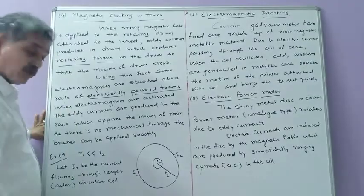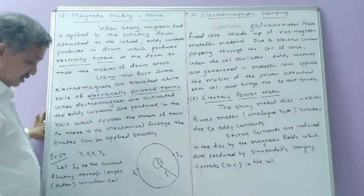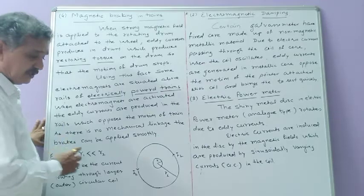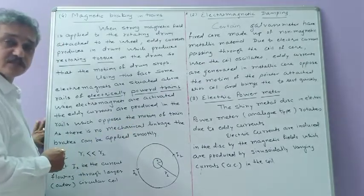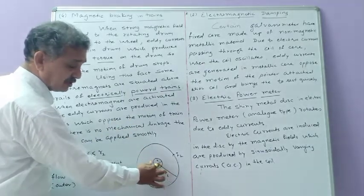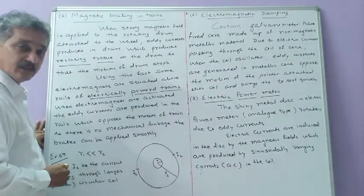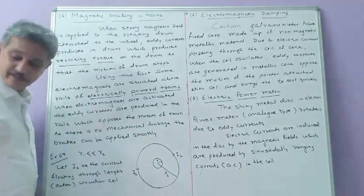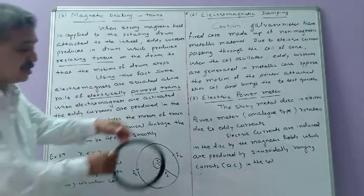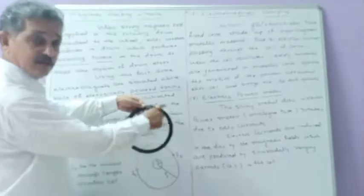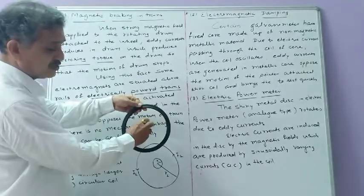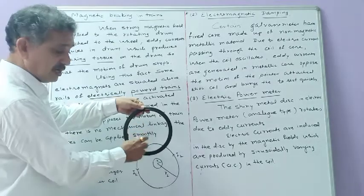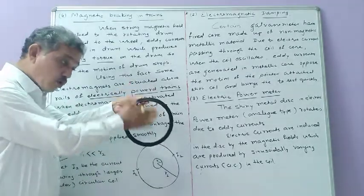Now we see Example 6.9. In this example we have two conducting coils — one larger of radius R2 and another smaller of radius R1. They are concentric and coplanar, like a big ring with a small ring at its center. Both are conducting wire rings that are co-centered as well as coplanar.